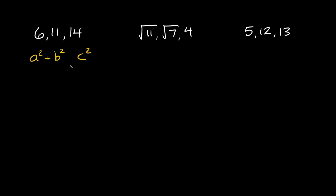I left the equal sign blank because this is going to vary. If c squared is bigger than a squared plus b squared, then that means this set of numbers creates an obtuse triangle. If a squared plus b squared is bigger than c squared, the hypotenuse, then these three side lengths form an acute triangle. And if a squared plus b squared is equal to c squared, then these three side lengths form a right triangle.